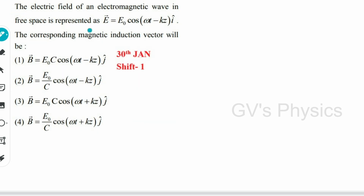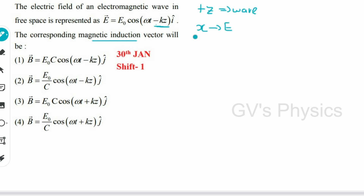The next question follows the same pattern, but instead of finding the value we find the equation for the magnetic field. The question gives the electric field of an electromagnetic wave in free space as E = E₀ cos(ωt − kz) î. The minus z term tells us the wave is travelling in the positive z direction, and the electric field is along the x axis (î), so the magnetic field will be along the y axis (ĵ).